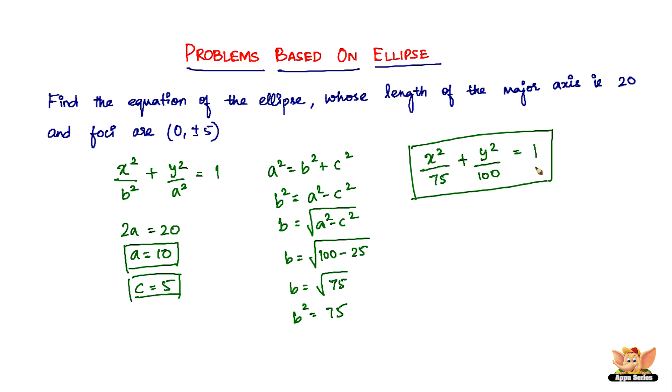So therefore the required equation of the ellipse in question is x squared by 75 plus y squared by 100 equals 1.